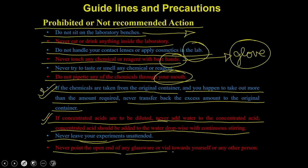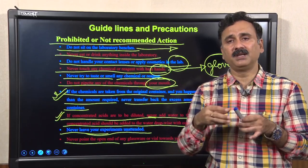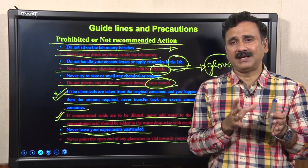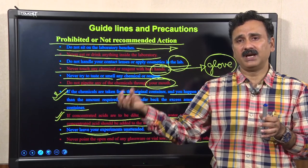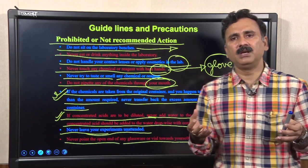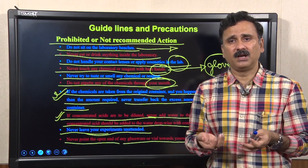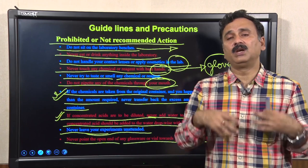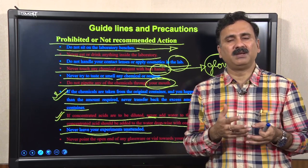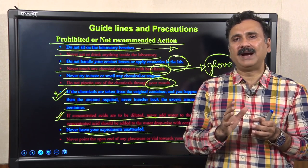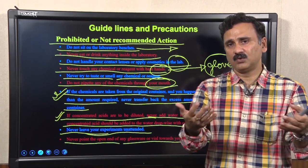Never point the open end of glassware or a vial toward yourself or any other person. When opening a container, always open it so that the mouth faces away from your face and not toward someone else. If a gas has built up or pressure has built up inside, liquid can spill out. Just as opening a soda bottle toward your face results in liquid spraying onto you, the same applies to chemical bottles — always keep the vial mouth away from your body and others.